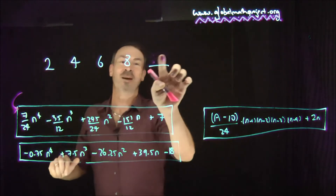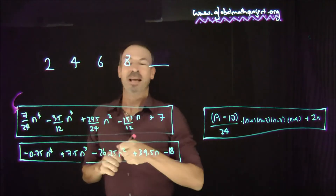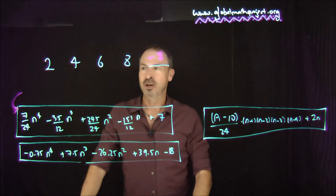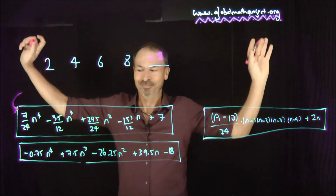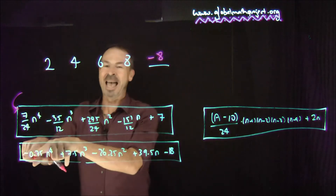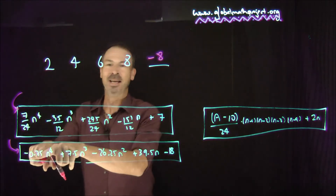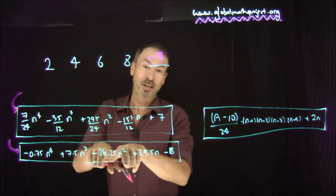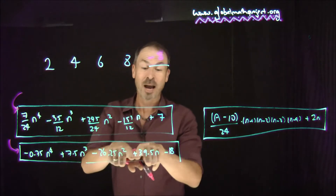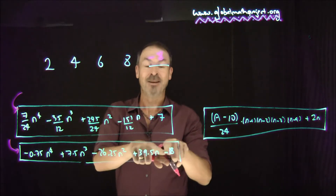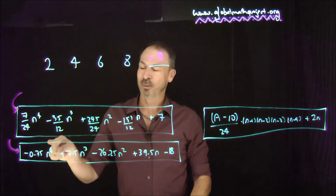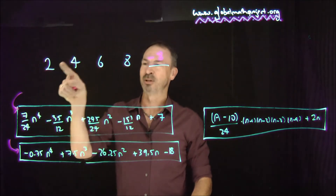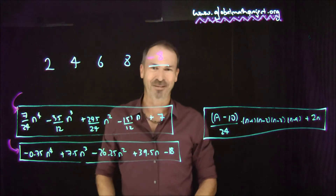Actually, you can change your mind. I'm wrong. It's really following this formula instead, and the final answer is negative 8. So 2, 4, 6, 8, negative 8. Because it's actually following this formula: −0.75n⁴ + 7.5n³ − 26.25n² + 39.5n − 18. Put n = 1, 2, 3, 4, 5 into that formula, and out comes 2, 4, 6, 8, negative 8.